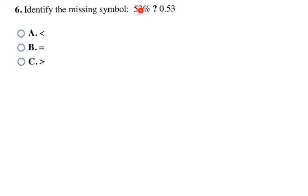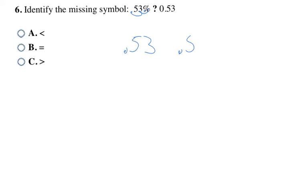Now I'm comparing a percentage and a decimal. I'll convert the percentage to a decimal by moving the decimal two places to the left — that's the pattern when you divide by 100. So 53% becomes 0.53. My second number is also 0.53. So 53% is exactly the same as 0.53, making these two equal to each other — choice B.